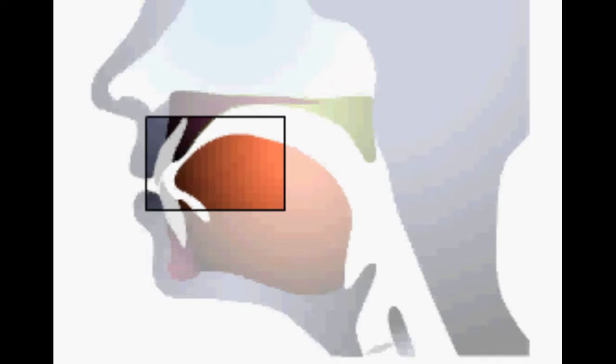The tongue rises and the sides of the tongue contact the palate. The tongue tip does not touch the palate. This leaves a narrow passage for air to flow out through. Upper and lower teeth are in contact. Lip position depends on sounds before and after the s.